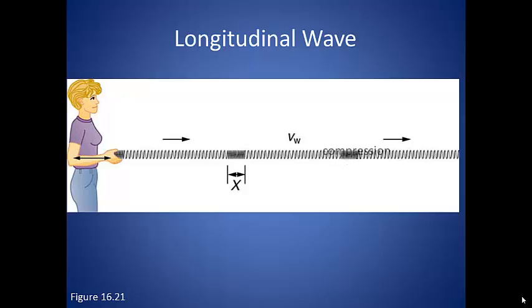The bunching up area is called a compression, while the spreading out is referred to as a rarefaction. Sound waves are an example of this type of wave.